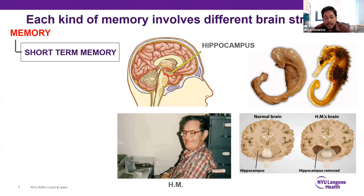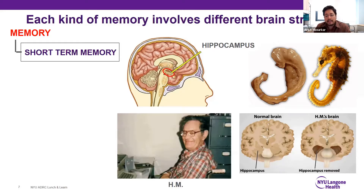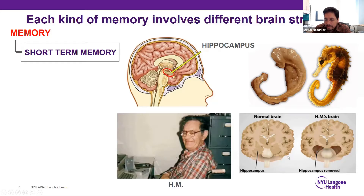Unfortunately, a side effect of that surgery was that HM was no longer able to form new memories. His family noticed this, and he was eventually studied for decades by research teams. They realized that the removal of his hippocampus led to the short-term memory problem, thereby linking the hippocampal structure to short-term memory function. A cartoon shows HM's brain with hippocampus removed versus a normal brain with an intact hippocampus.